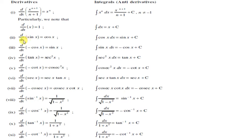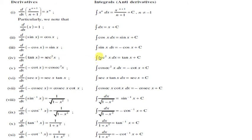d/dx of sin x = cos x, तो ∫cos x dx = sin x + c. d/dx of cos x = -sin x, इसलिए d/dx of (-cos x) = sin x, तो ∫sin x dx = -cos x + c. d/dx of tan x = sec²x, इसलिए ∫sec²x dx = tan x + c.